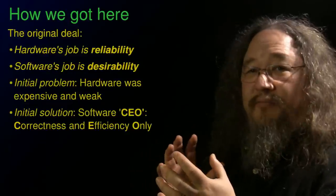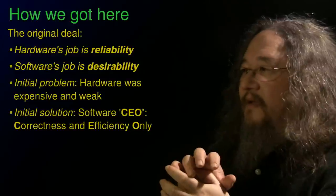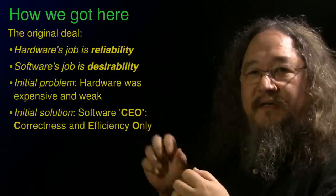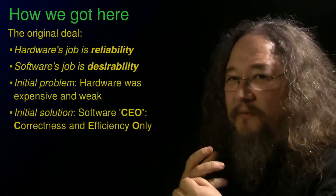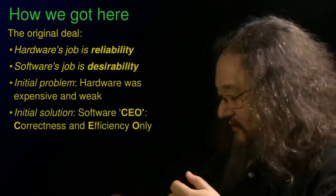And so there was incredible pressure to be correct for whatever desirability meant, and then to be as efficient as possible. And this sort of CEO idea that software is about correctness and efficiency only is still the backbone of computer science, algorithm design, and so forth.